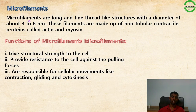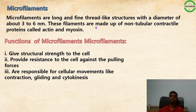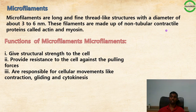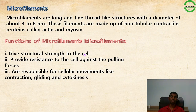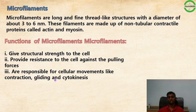Microfilaments are long, fine, thread-like structures with a diameter of about 3–6 nm. They are made up of non-tubular contractile proteins called actin and myosin. Their functions include providing structural strength and resistance against pulling forces on the cell, and they are responsible for cellular movements such as contraction, gliding, and cytokinesis.